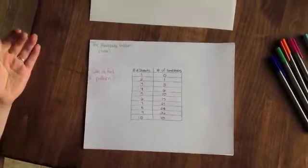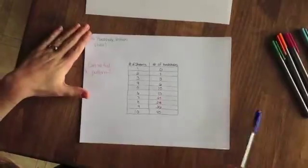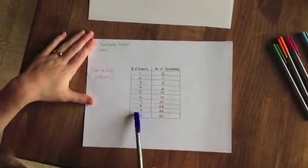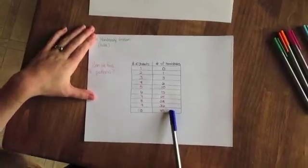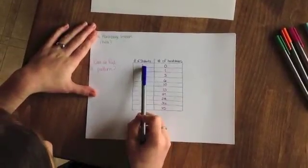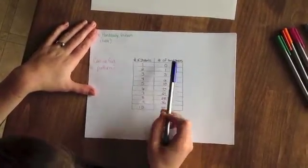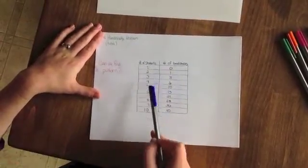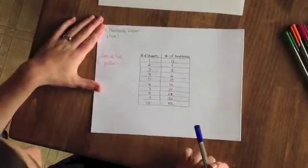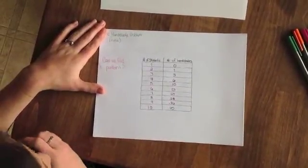Okay, now we're going to look at this using a table. We have the number of students in this column and the number of handshakes in that total group in this column. So for one student, there would not be any handshakes. For two students, we would have one handshake. For three students, we would have three, and so on. But can we find a pattern here by looking at this table?